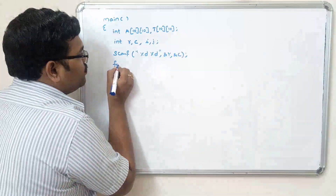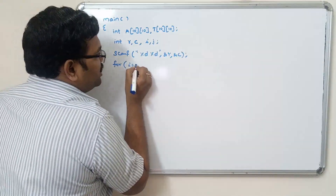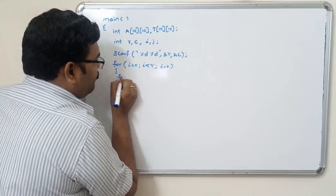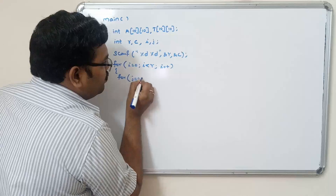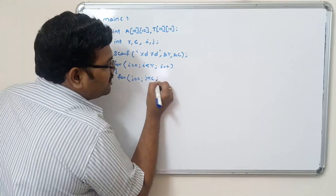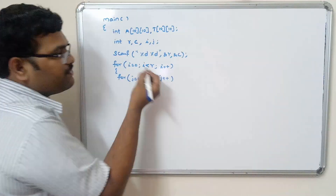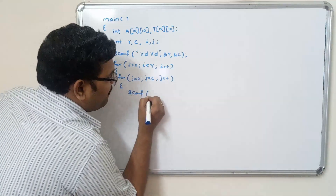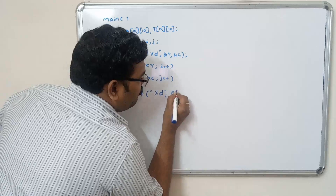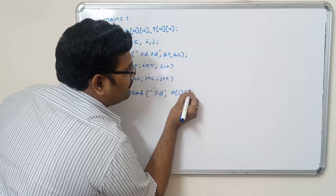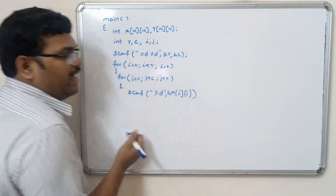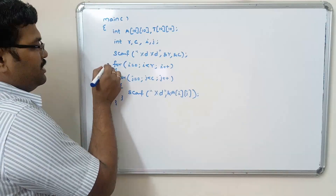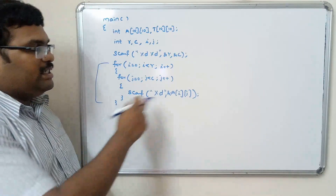To read the elements into the matrix, we use a nested for loop: for i = 0, i less than rows, i++ — for j = 0, j less than columns, j++ — where i is for rows and j is for columns — and then scanf("%d", &A[i][j]) to read each element into the array.